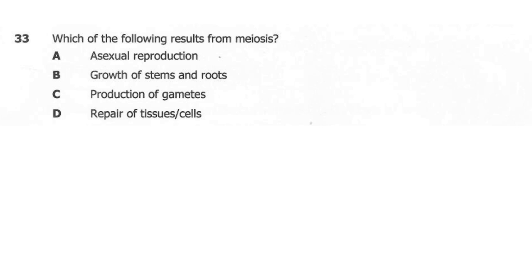Question 33. Which of the following results from meiosis? A: sexual reproduction. B: growth of both stems and roots. C: production of gametes. D: repair of tissues or cells. The correct answer here is C, production of gametes. Meiosis leads to production of four haploid cells which normally become diploid when fertilization takes place. Meiosis is the division which leads to production of four haploid cells.